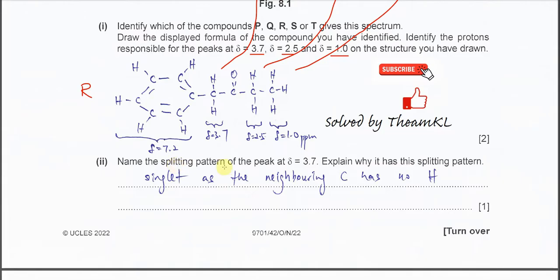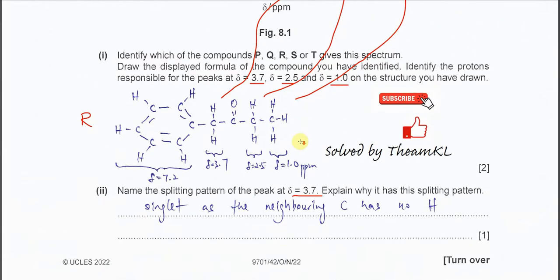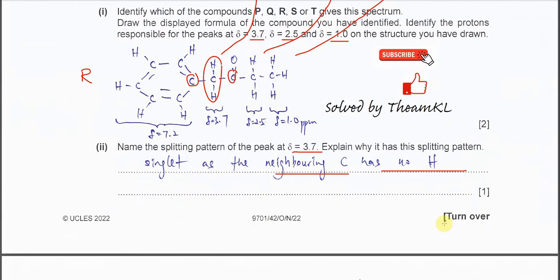Part two: name the splitting pattern of the peak at 3.7 ppm. This is a singlet. Why is there no triplet or quartet — why just a singlet? If you look carefully, on the adjacent carbons there are no protons to couple with, so it will always be a singlet. The neighboring carbon has no hydrogen, so there is no spin-spin coupling and no splitting.